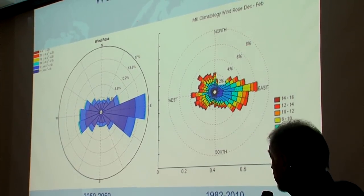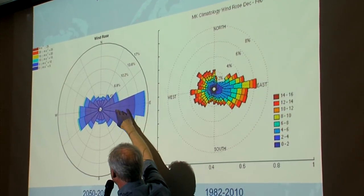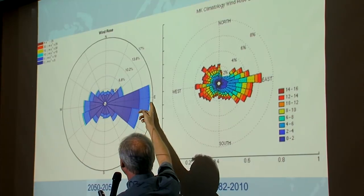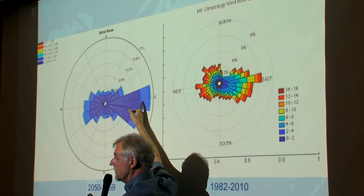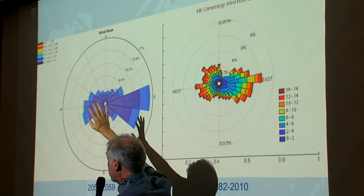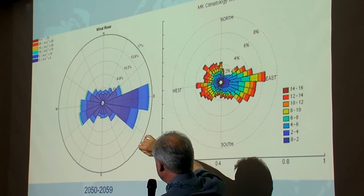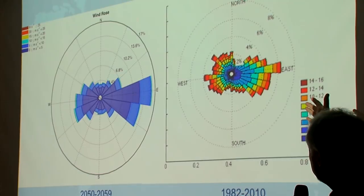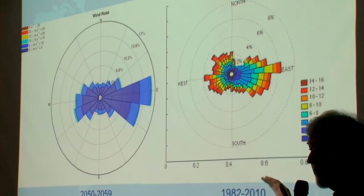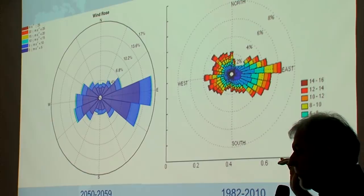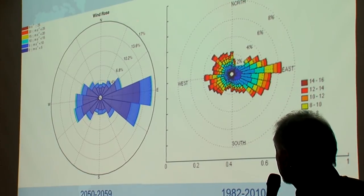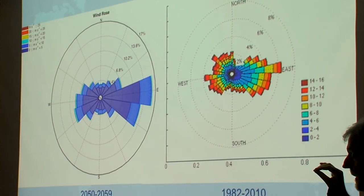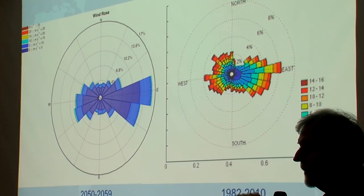Looking at the wind rose — which shows east winds, west winds, frequency as distance from center, and wind speed by color — you can see the model projection for the future maps pretty closely to the current situation in terms of wind direction. The large-scale wind circulation pattern will be similar. What is striking is that wind speeds are going to be less, mostly under about 10 meters per second, or 20 knots.